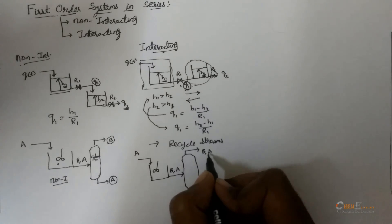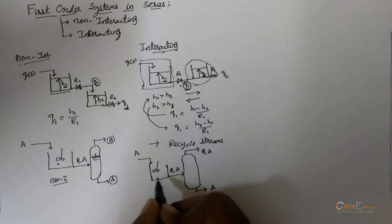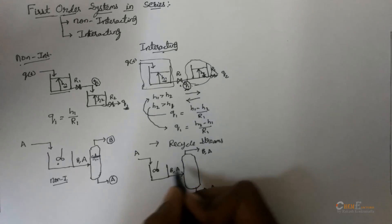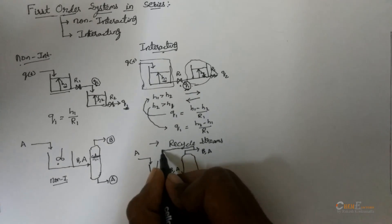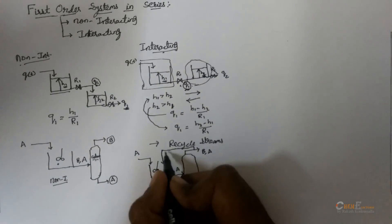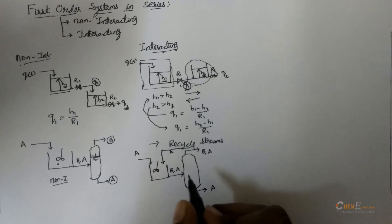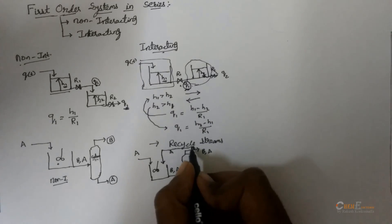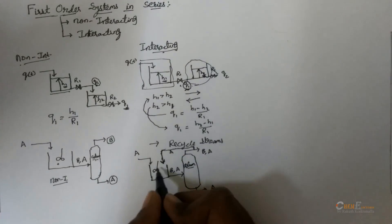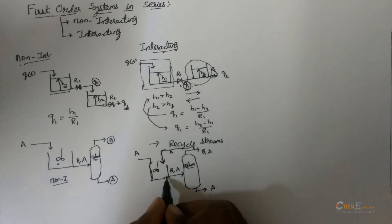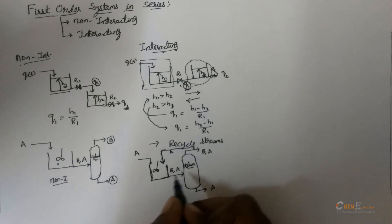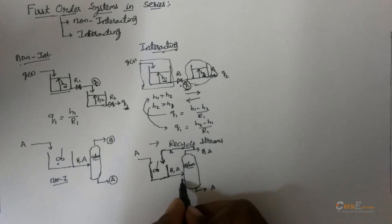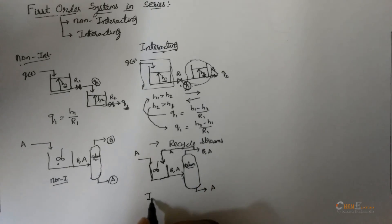To purify this, you will be increasing the yield of the system by recycling it. Here if you make any changes in the column, it will also affect the recycle stream, and this will indirectly affect the reactor. An upstream process is dependent on a downstream process. These type of systems are called interacting systems.